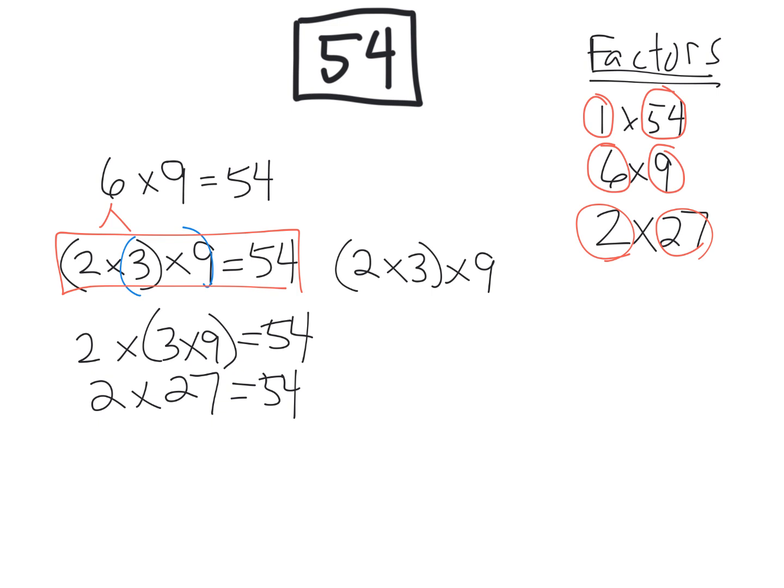Now we could use the commutative property and say 3 times 2 times 9. And now we can use the associative property and group them differently. So now we can have 3 times 2 times 9.